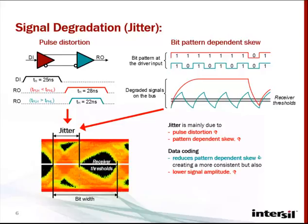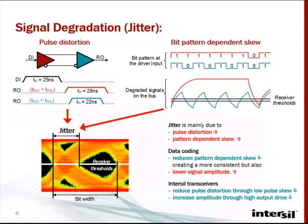but also of lower signal amplitude. Intersil's transceivers reduce pulse distortion and prevent low signal amplitudes by providing low pulse skew and high output drive capability.